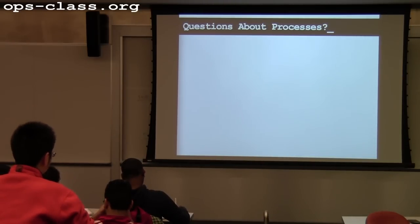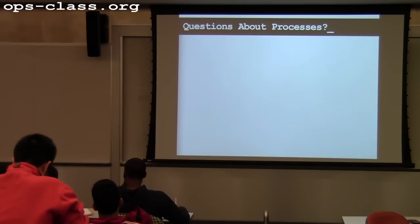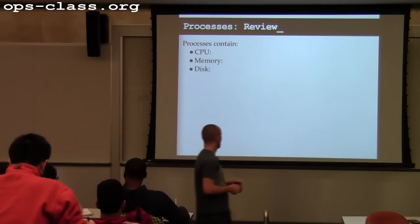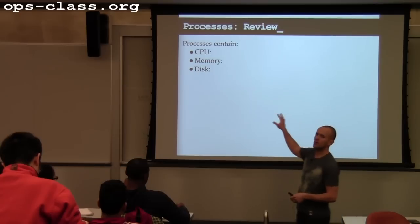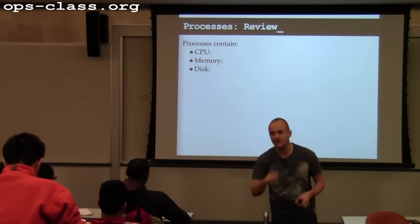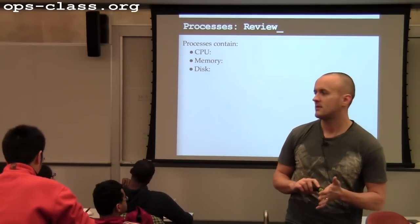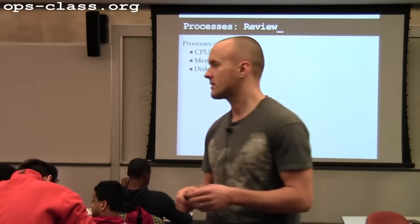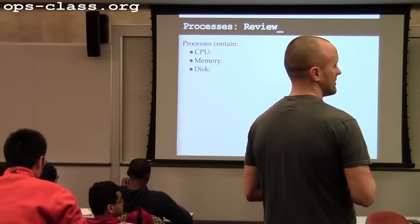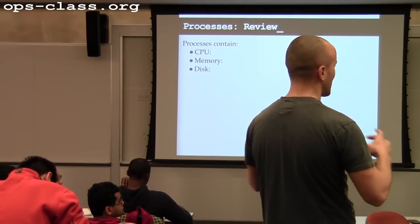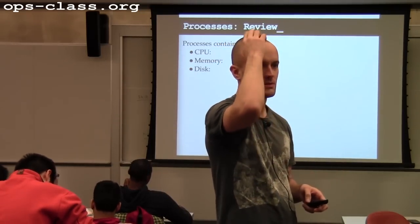We're pretty much done talking about the process abstraction. Processes contain things that abstract core system components: CPU, memory, and disk. The part of the process used to abstract the CPU is threads. For memory, it's address spaces — that rectangular thing with different areas lined up. For disk, it's file handles.